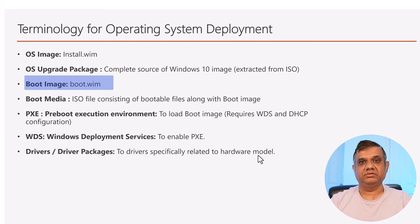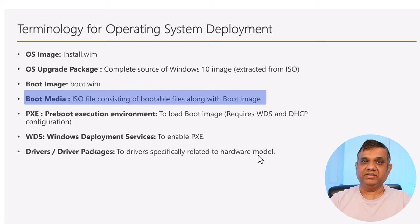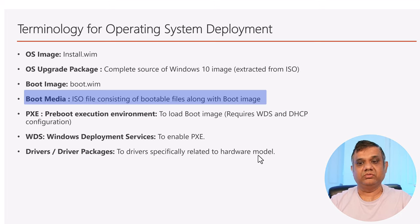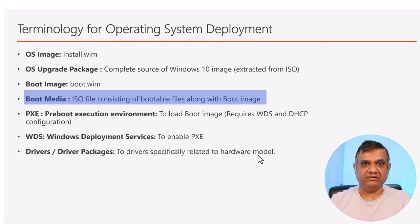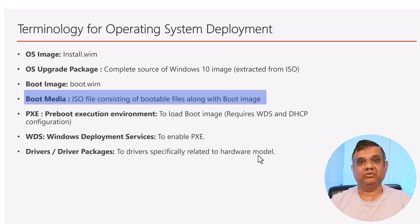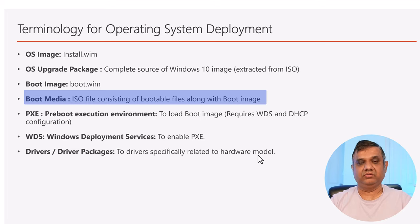Treat boot image like a launcher - to launch a rocket we need a rocket launcher, right? So to launch the task sequence and installation of the OS image, we need a boot image. Next is boot media, which is a confusing topic for newcomers. Boot image is a WIM file, but how is that WIM file going to load on a bare metal device? You need bootable files, so boot media is an ISO created through SCCM's 'Create Task Sequence Media' option.